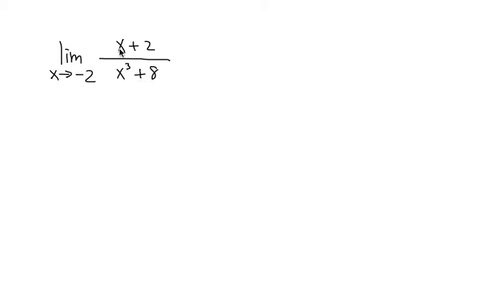So once again, plug in negative 2 into all the x to see what we get. Right here, we have negative 2 plus 2, we will get 0 on the top. Negative 2 in the parentheses to the third power plus 8, we also get 0 on the bottom. 0 over 0, we have to do more work.